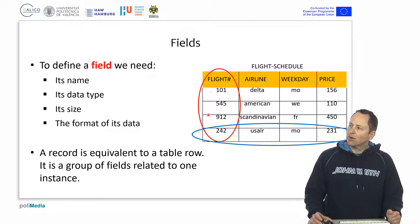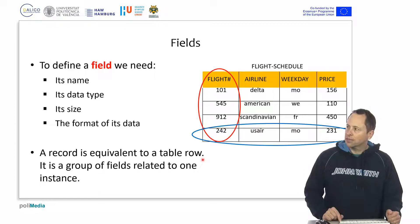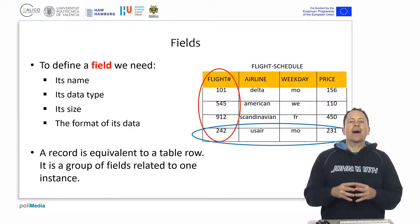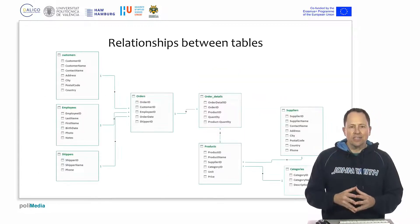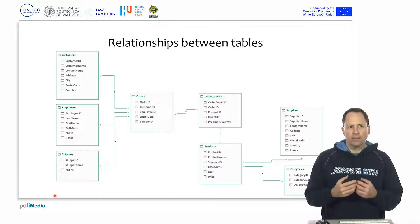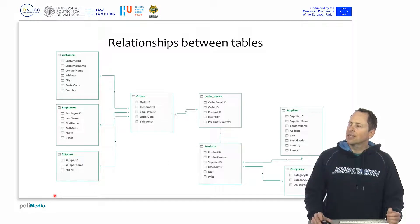A record is a group of fields related to a single instance. What gives the power to the relational database model is that the tables are related.